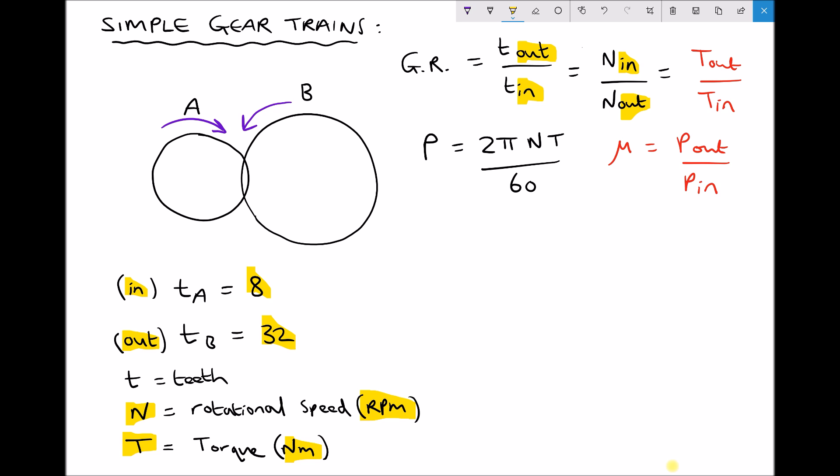I've written a third equation which is true only when the gear system is 100% efficient. So if the gear system is 100% efficient then we can also use the ratio of our torques, torque out over torque in, to get our gear ratio.